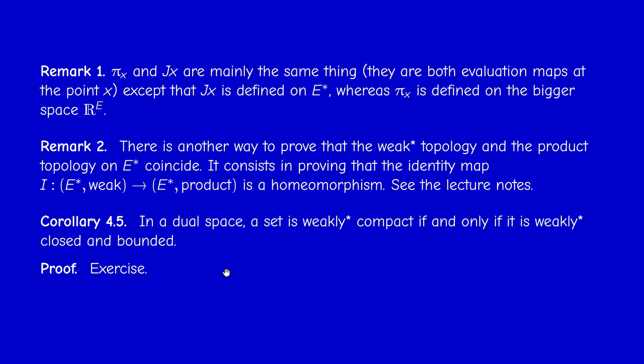To test your understanding, prove this corollary: in a dual space, a set is weakly star compact if and only if it is weakly star closed and bounded. One direction uses the fact that compact sets in Hausdorff spaces are closed, and for boundedness use the uniform boundedness principle. The converse uses Corollary 4.4. This may appear on the exam, so it's a good way to prepare — you have all the tools.